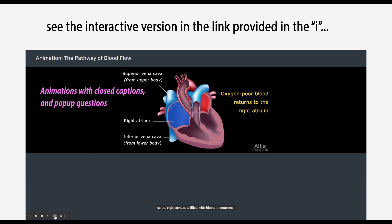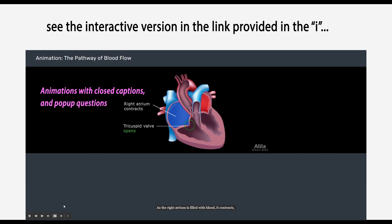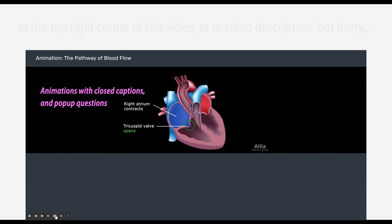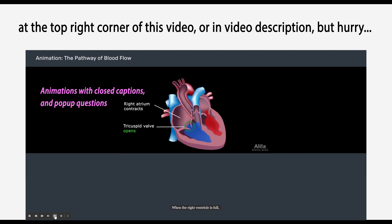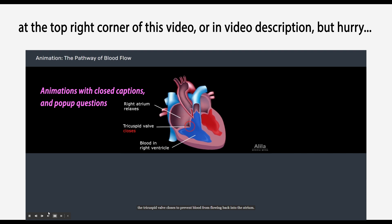As the right atrium is filled with blood, it contracts. The tricuspid valve opens, and blood is pumped into the right ventricle. When the right ventricle is full, the tricuspid valve closes to prevent blood from flowing back into the atrium.